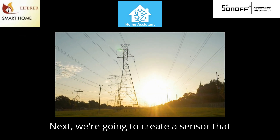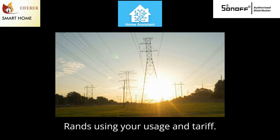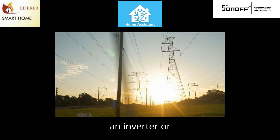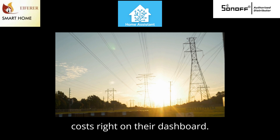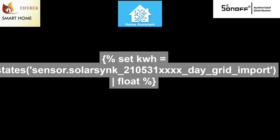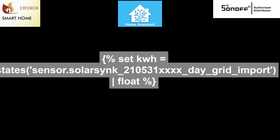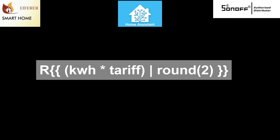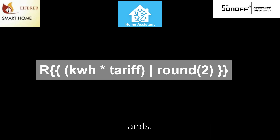Next we're going to create a sensor that shows your daily electricity costs in Rands, using your usage and tariff. This template is perfect for anyone using an inverter or energy monitor who wants to see the daily grid import costs right on the dashboard. First we get the kilowatt hours imported today from the grid, then we get the tariff you've set using an input number. Now we multiply them, rounded to two decimal places, with a prefix of 'R' for Rands.